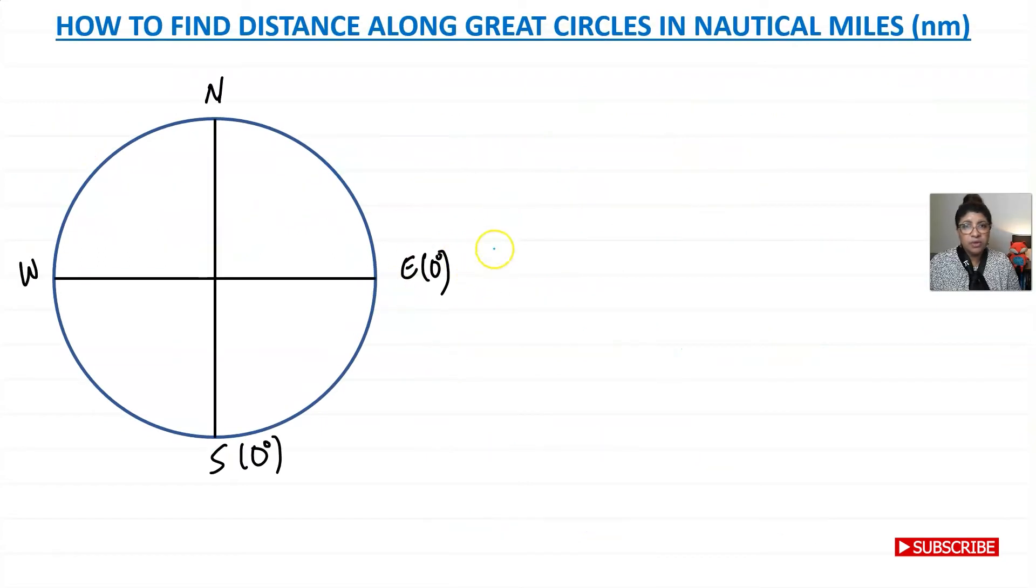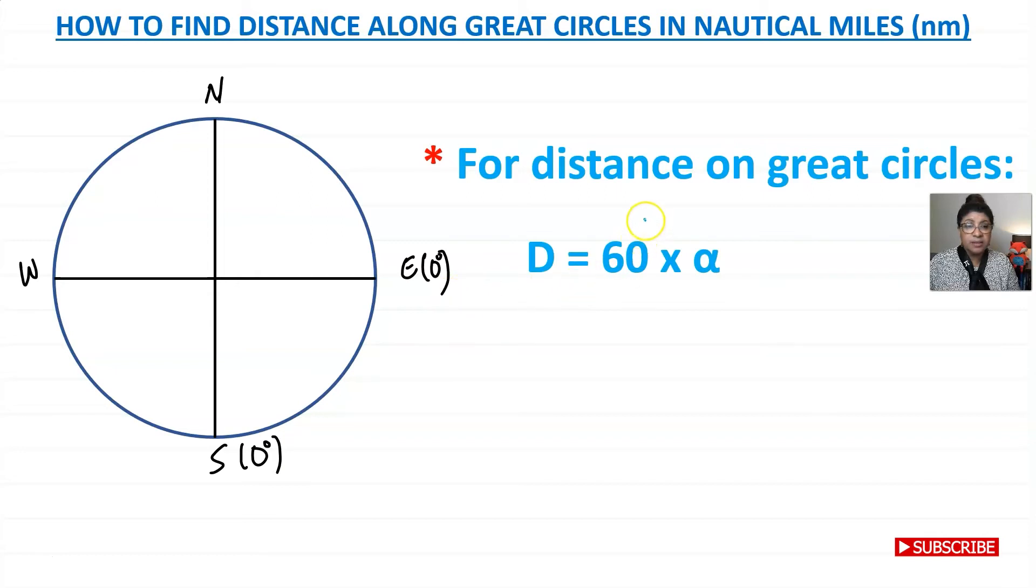Let me show you how this looks like on the diagram. So we know distance on great circles is given as D = 60 times alpha. So what is the alpha then?